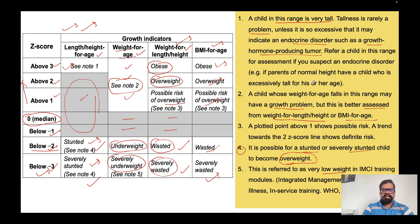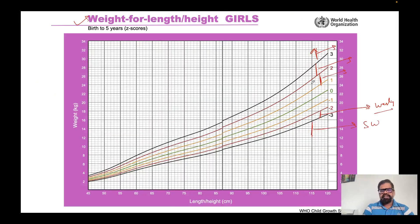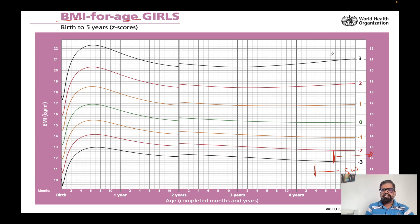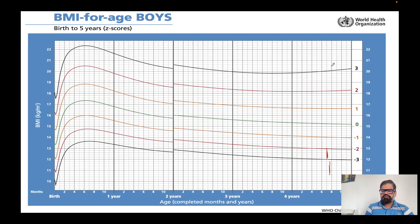The same interpretation applies to BMI-for-age. For girls: above three z-score is obese, between two and three is overweight, and between one and two is a possible risk of overweight. For boys as well: above three is obese, between two and three is overweight, and between one and two is a possible risk of overweight. If you interpret the table correctly, it will be easy to remember.